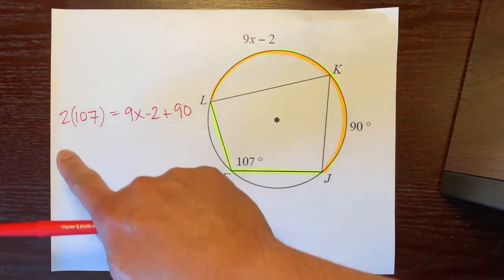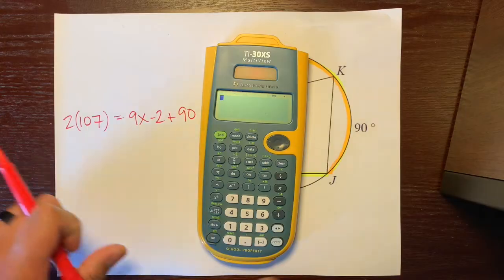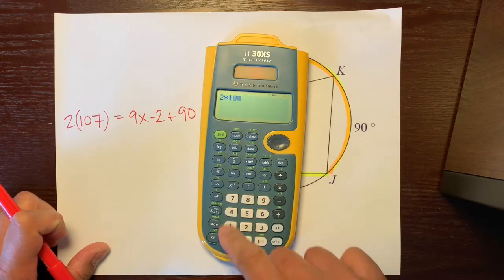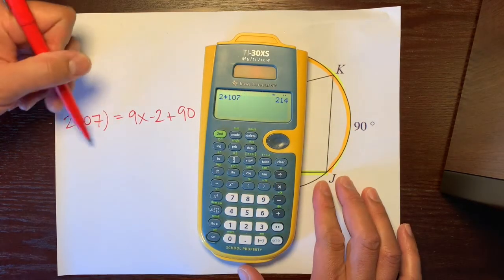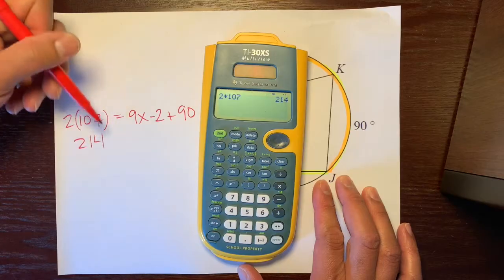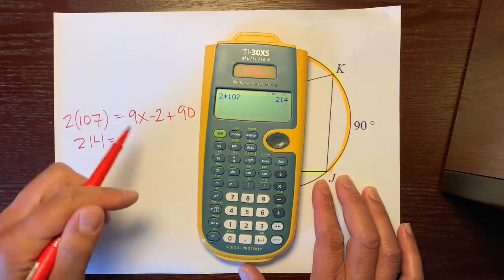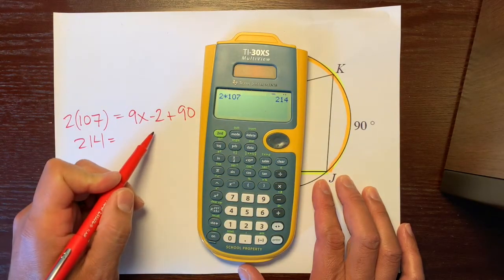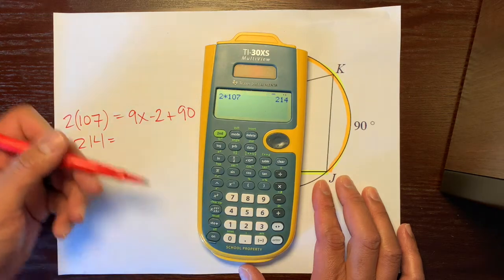So we're going to take this 2 and multiply it by 107, which is 214. I don't think I needed a calculator for that one, but I already used it. And then we're going to combine like terms over here. Negative 2 plus 90 is 88.